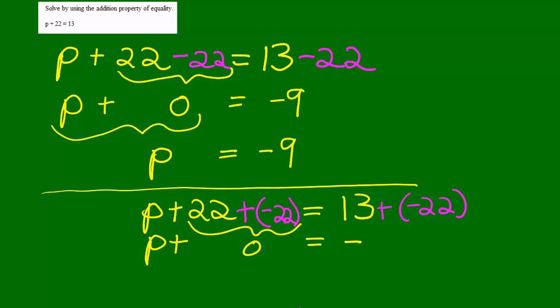So P plus 0 will equal 13 minus 22, which is negative 9. So P equals negative 9.